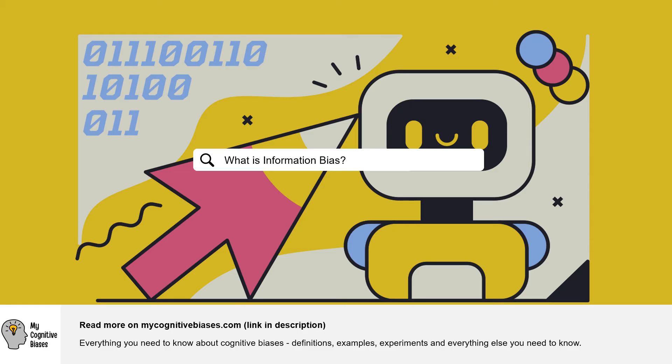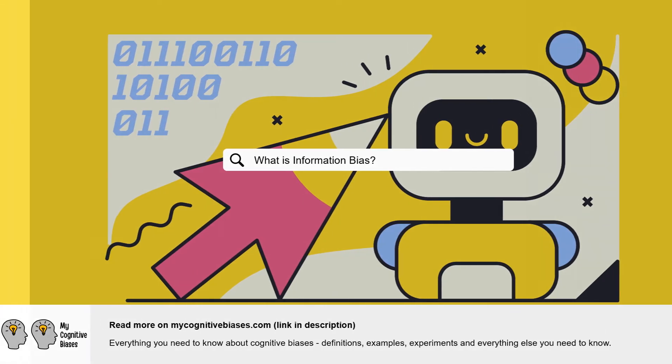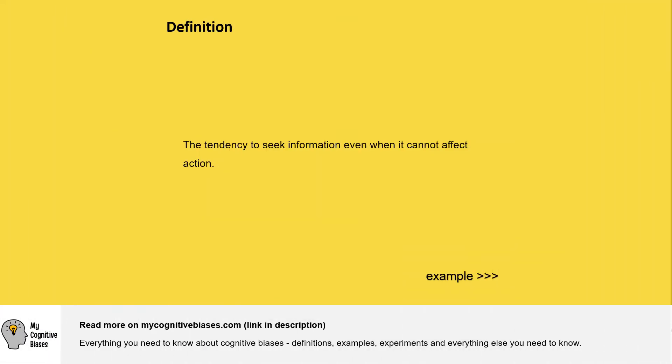What is information bias? Definition: the tendency to seek information even when it cannot affect action.